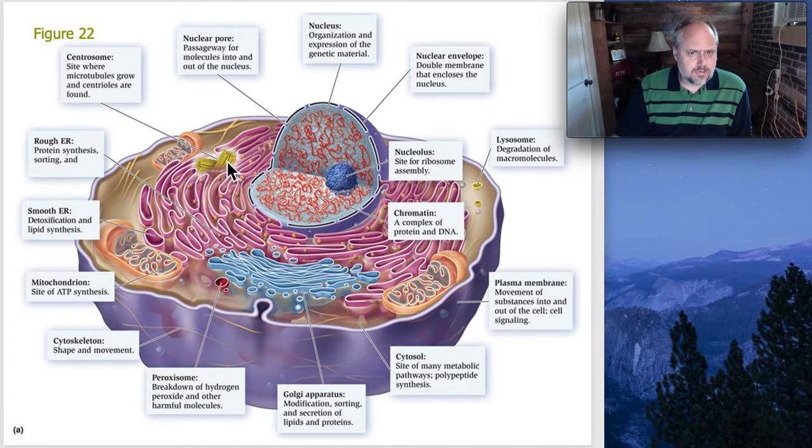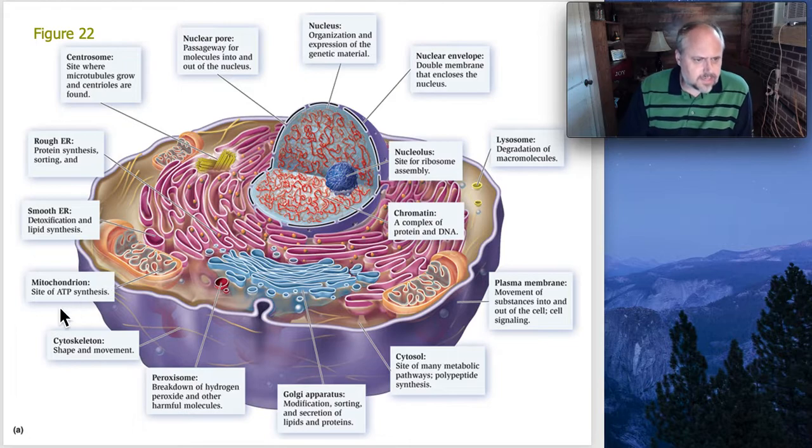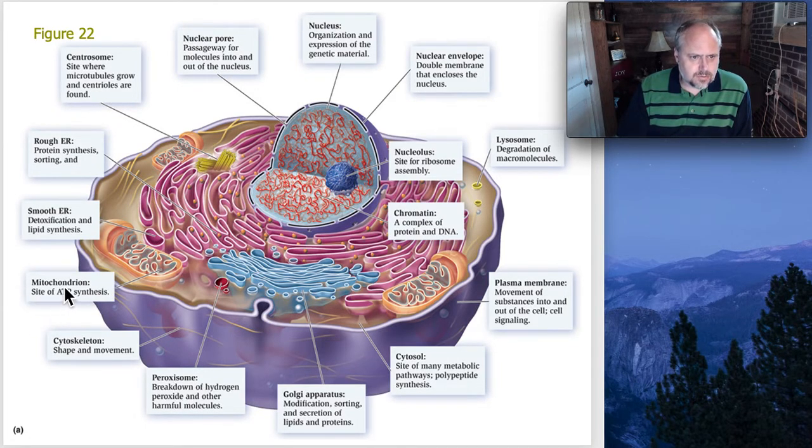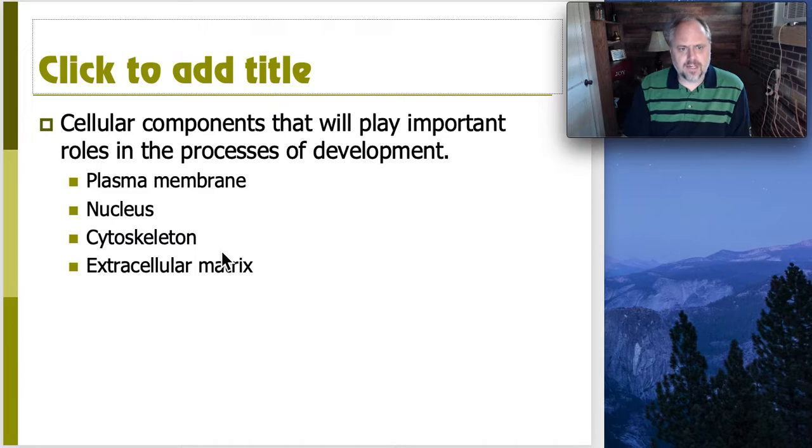We'll see the centrosome come out when we do division. And what's not in this picture is everything outside the cell, what we call the extracellular matrix. So we're not going to look at some of these others. We won't worry about the ER and the mitochondria and the lysosome and others. We're going to focus primarily on these.